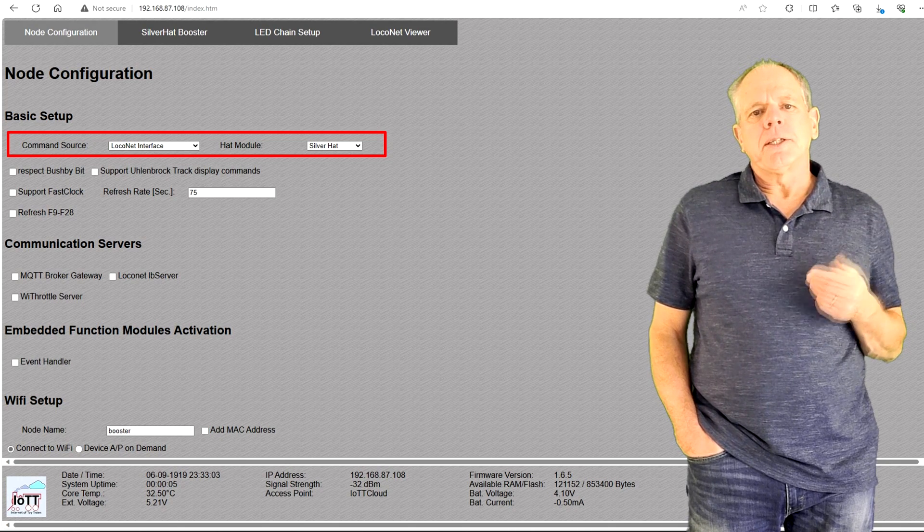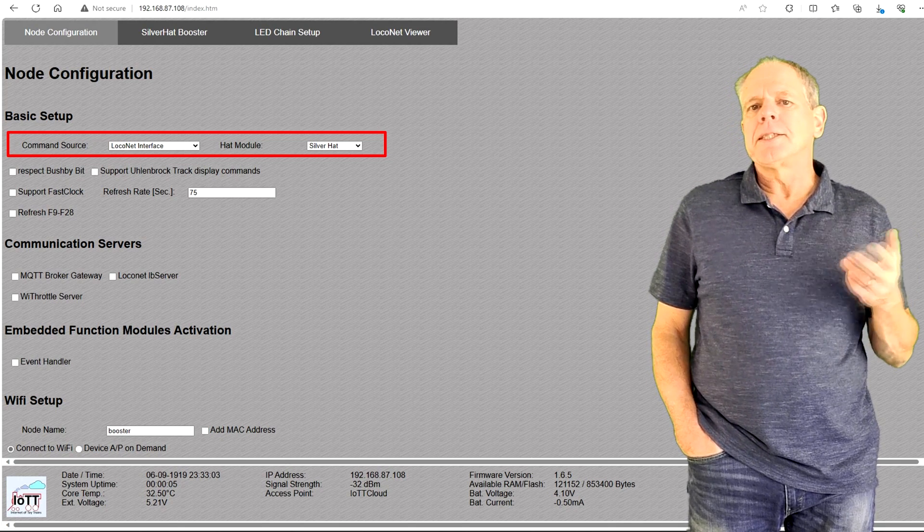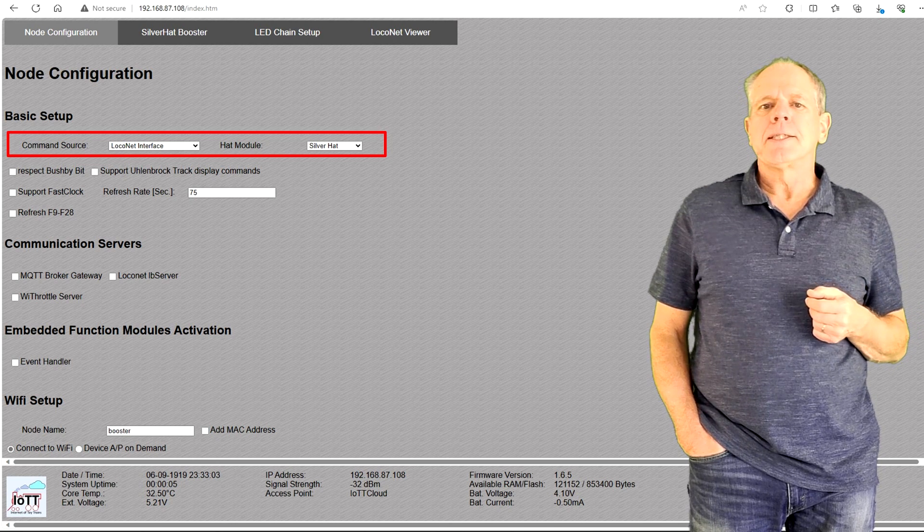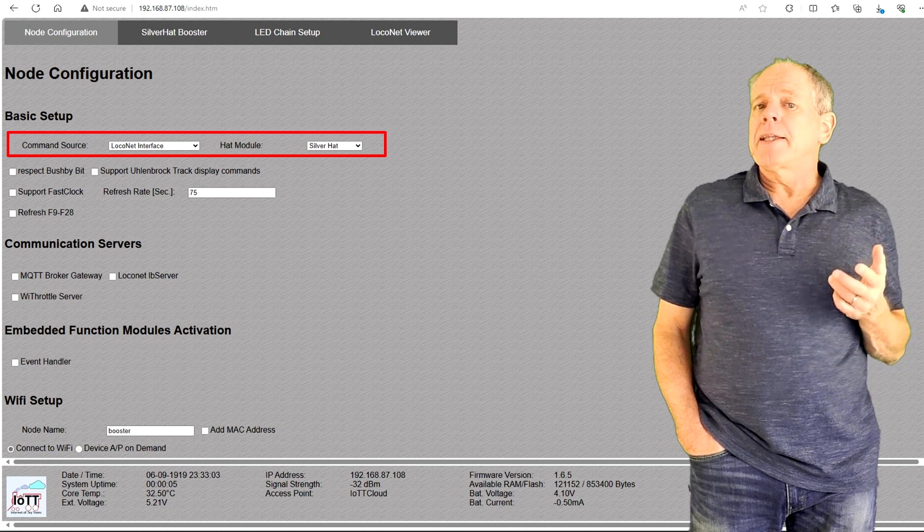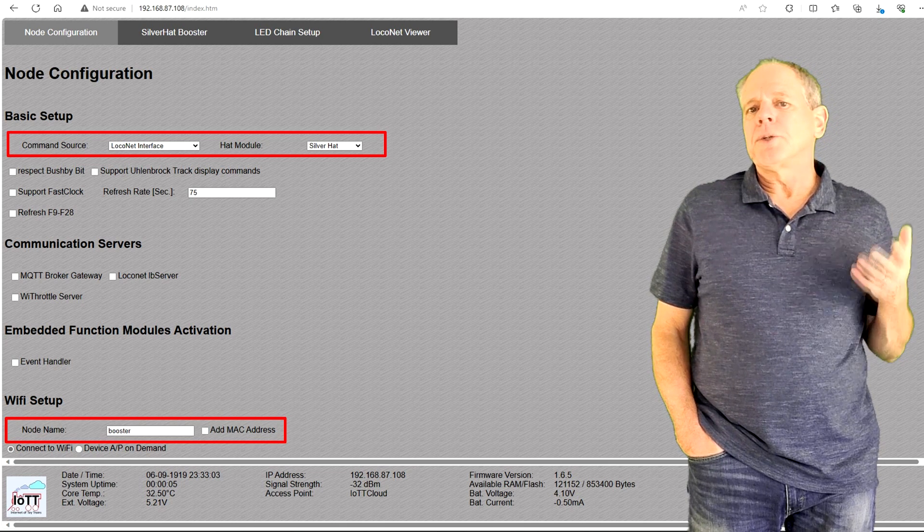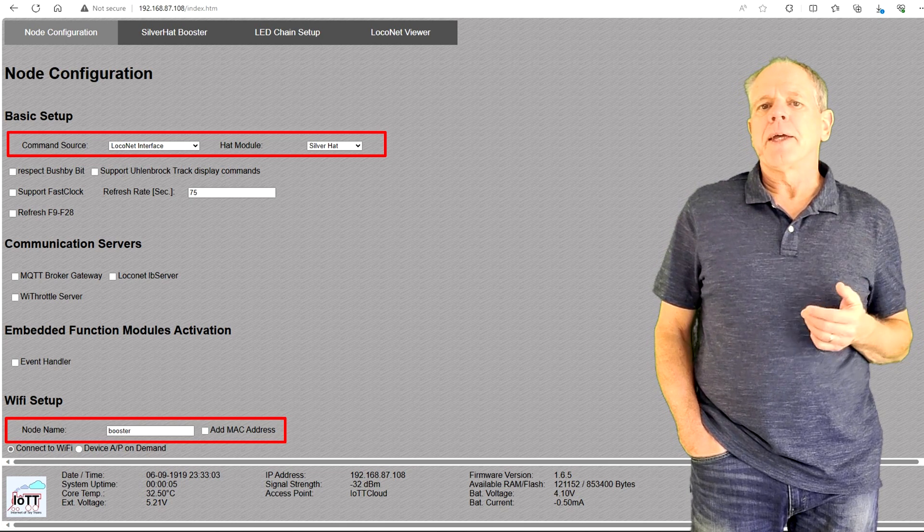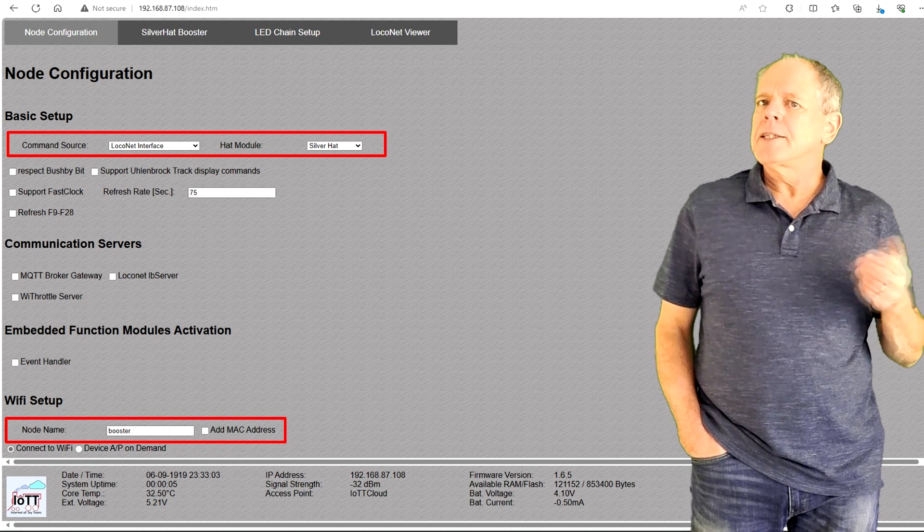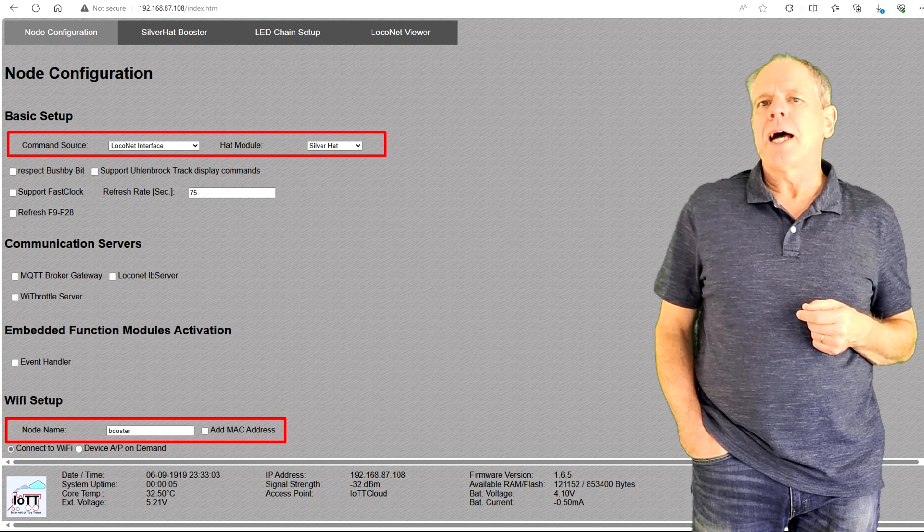In the node configuration, select Lockonet or DCC interface as command source, depending on your DCC system, and SilverHat as the HAT module. If you want, you can also give it a meaningful name that you then can use in the web browser. I find this easier than using the IP address.